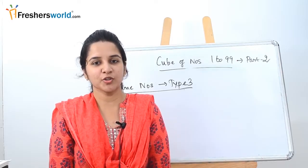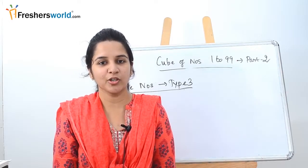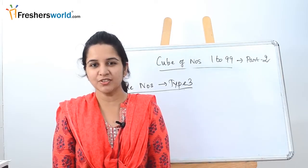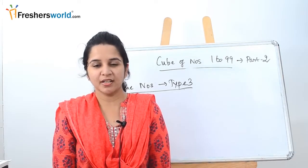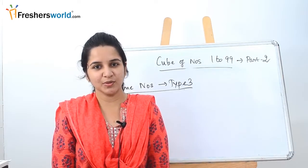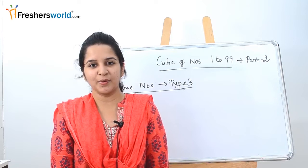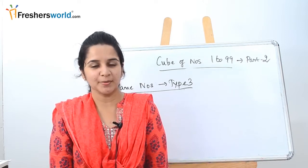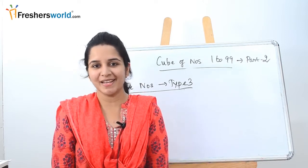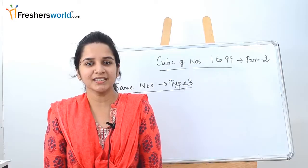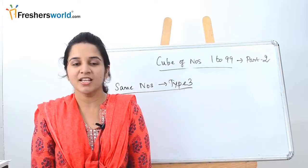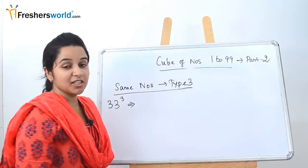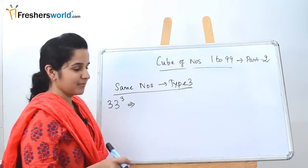Welcome to part 2 of cubes of numbers from 1 to 99. In part 1 we dealt with two types: numbers starting with 1 and numbers ending with 1. In part 2 we deal with the other two types: same numbers and different numbers.